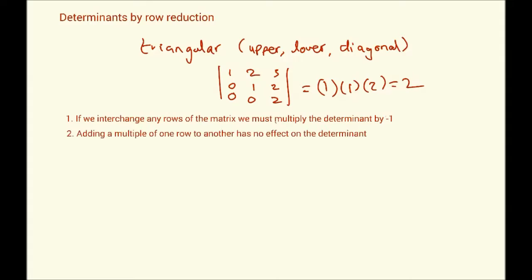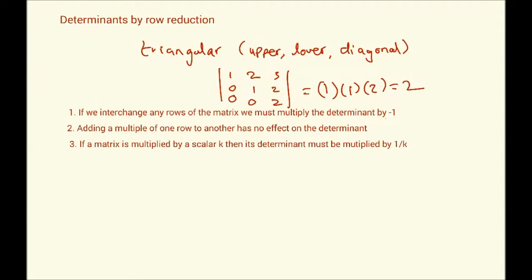Second, so number two, adding a multiple of one row to another has no effect on the actual determinant. So, we can easily, that means the elimination, the actual elimination that we do when we have a leading one and we try to get rid of the, try to make the number underneath zero, that particular row operation has no effect on the determinant. So, we can perform many of those and it will not affect the actual determinant calculation.